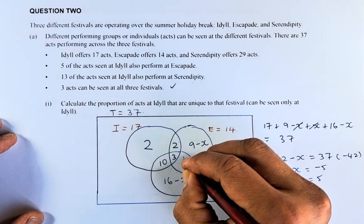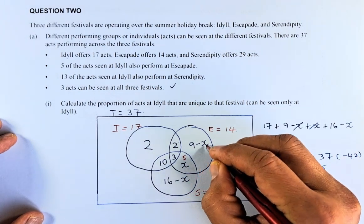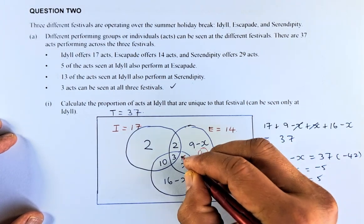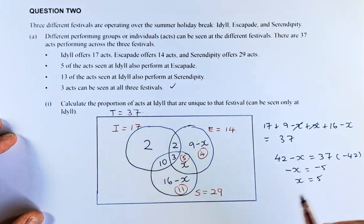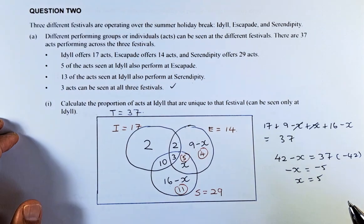Once you know X equals to 5, we are going to substitute X equals to 5 here. X equals to 5, 9 minus 5 is going to be 4. And then 16 minus 5 is going to be 11. So we have filled up all this box and all the regions.